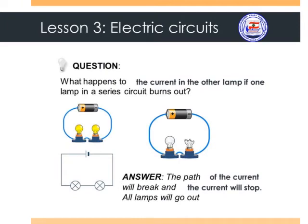Let's look at the following picture and try to understand more what we just explained. The question is: what happens to the current in the other lamp if one lamp in a series circuit burns out? As you can see in front of you, you have a series circuit made of two lamps and a battery. One of these lamps breaks, and the second will not light because the current can't move through the circuit anymore.